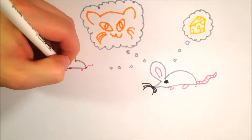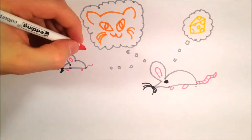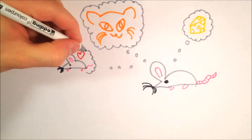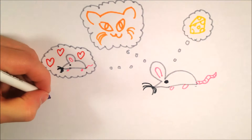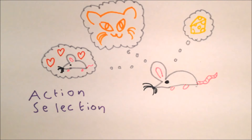In order for an animal to function well, behaviors appropriate to the situation need to be selected and inappropriate behaviors inhibited. This process is known as action selection. Informally, it is the problem of how do we decide what to do next.